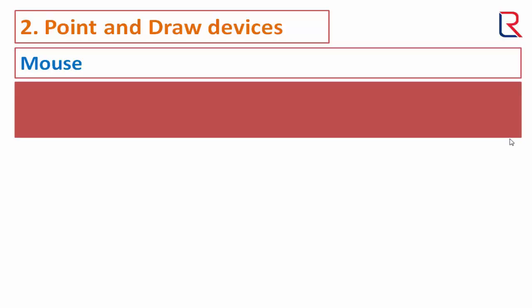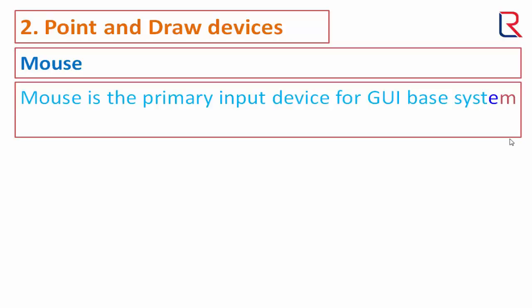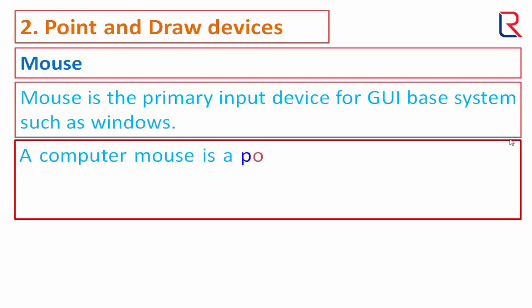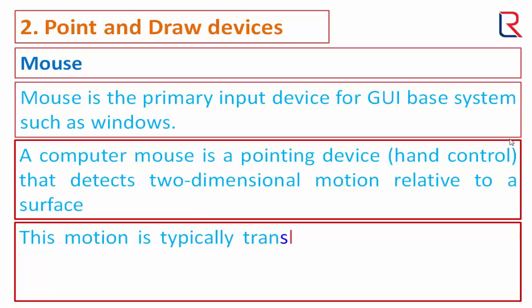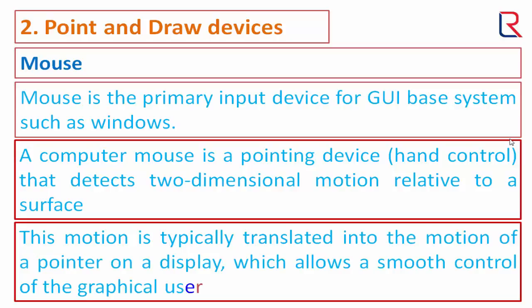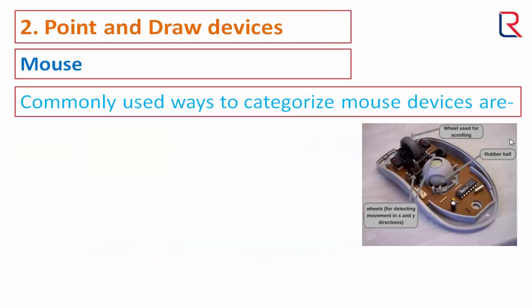Mouse: a mouse is the primary input device for GUI-based systems such as Windows. A computer mouse is a pointing device that detects two-dimensional motion relative to a surface. This motion is typically translated into the motion of a pointer on a display, which allows smooth control of the graphical user interface.